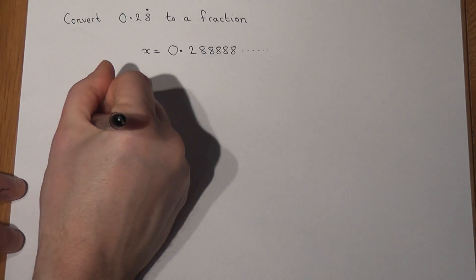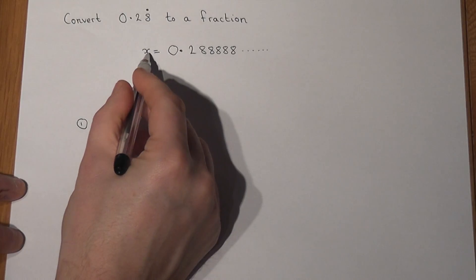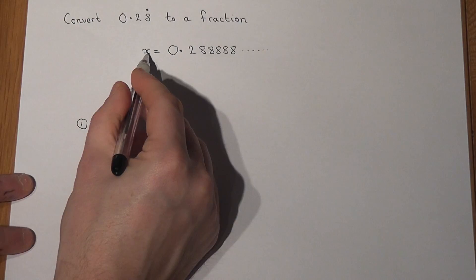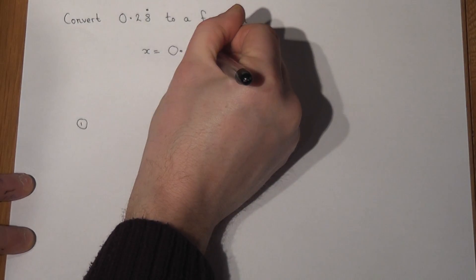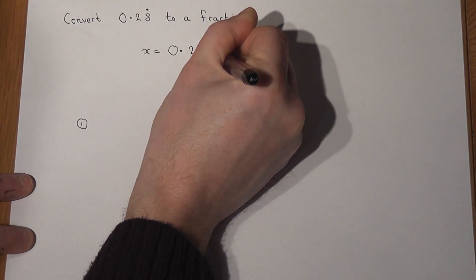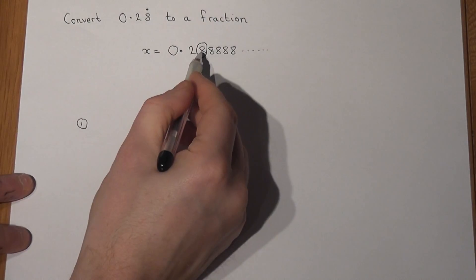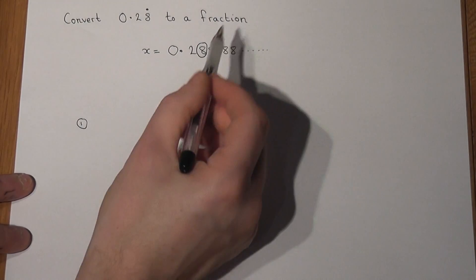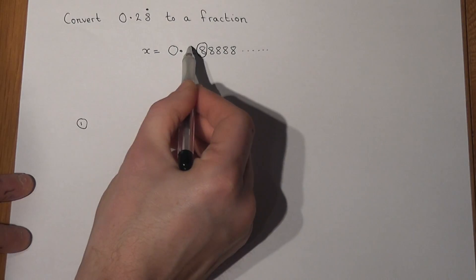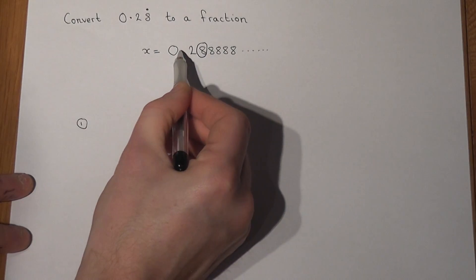Step one: I times this number by enough tens to get the circled recurring bit just next to the decimal point. I want to move it just one place to get it next to the point.